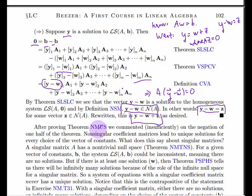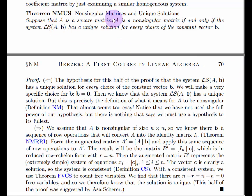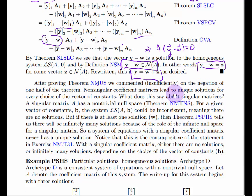Let's go back to a previous theorem about non-singular matrices and unique solutions, which said: a matrix is non-singular if and only if AX equals B has a unique solution for every choice of B. We didn't talk about the case of singular matrices — so now let's address that. A singular matrix has a non-trivial null space.